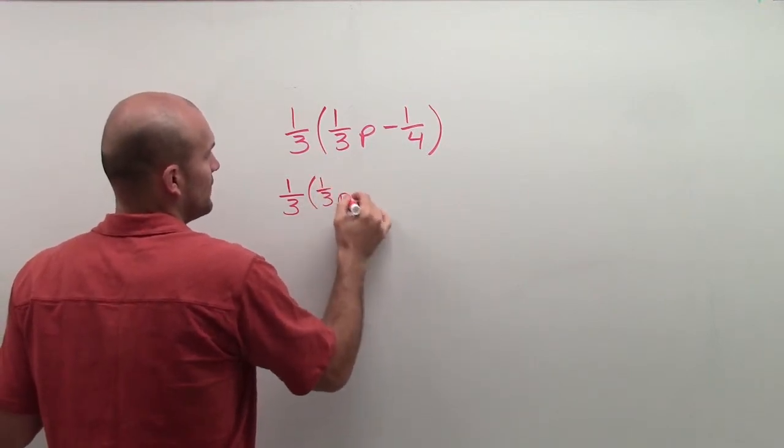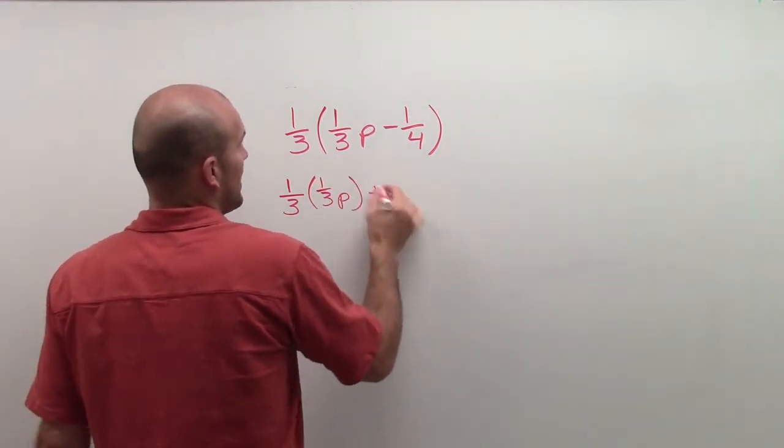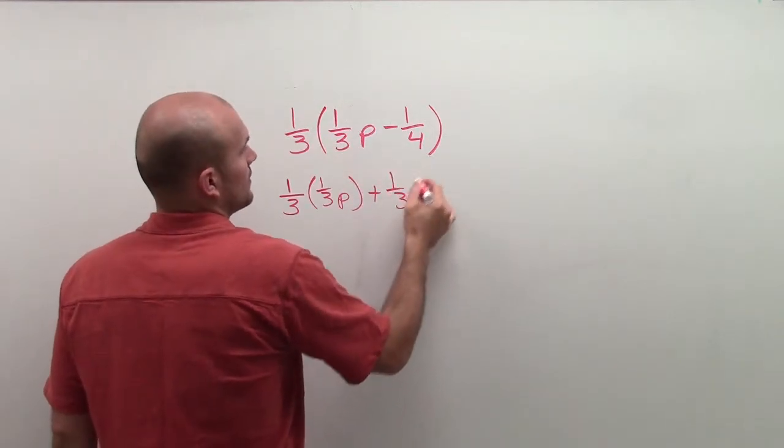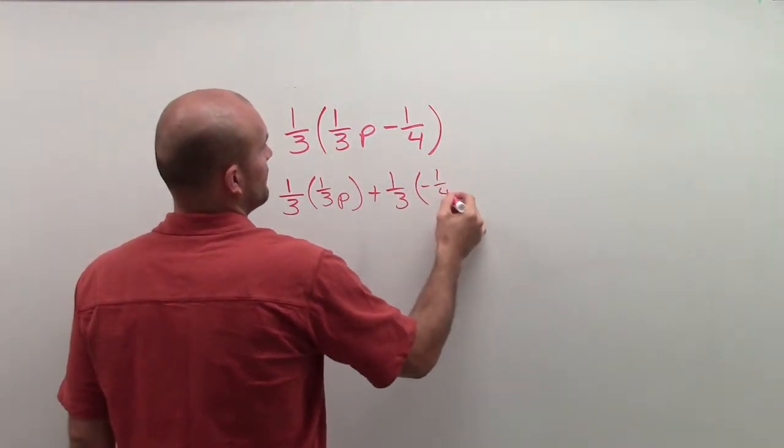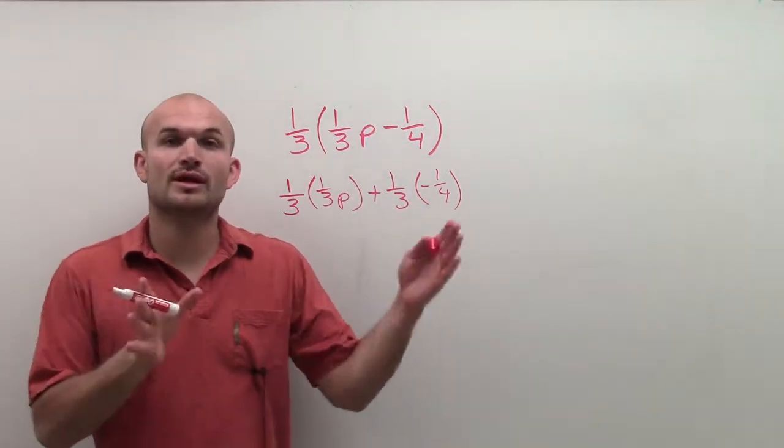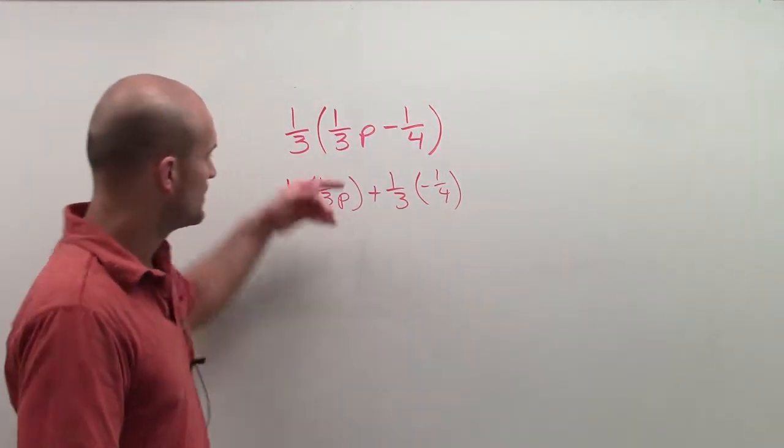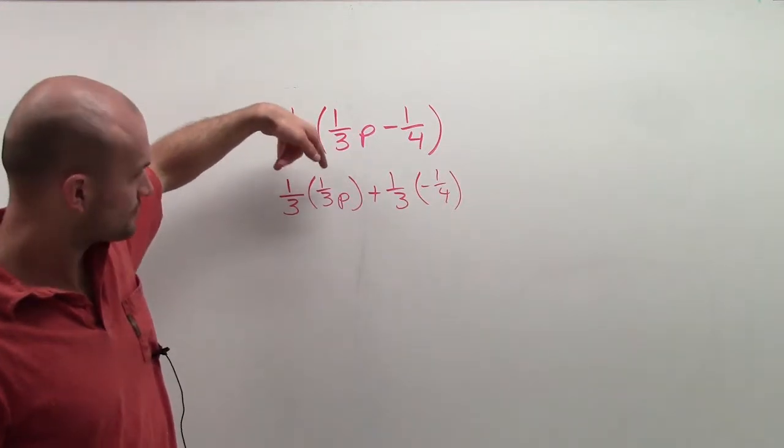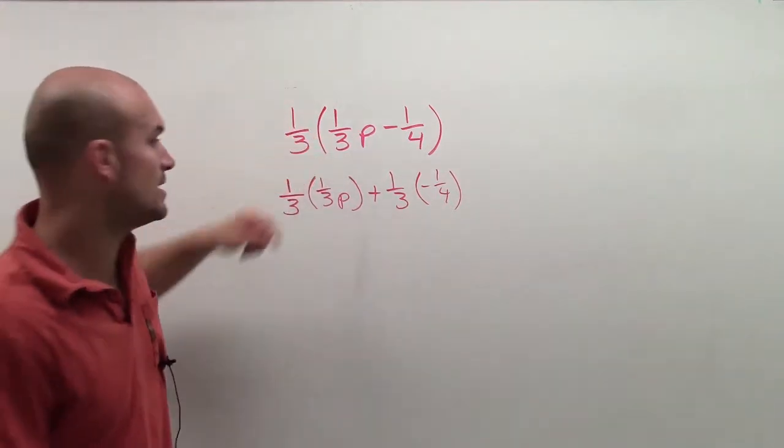We have one-third times one-third p, and then positive one-third times negative one-fourth. Now just remember, multiplying fractions is very simple: we multiply our numerators and we multiply our denominators.